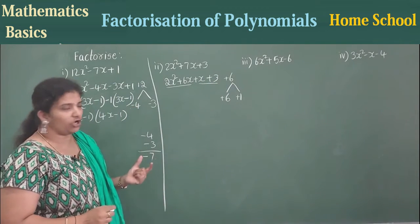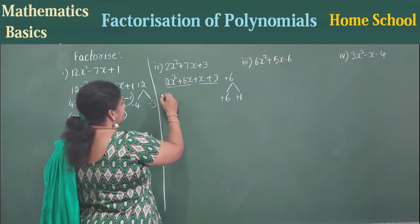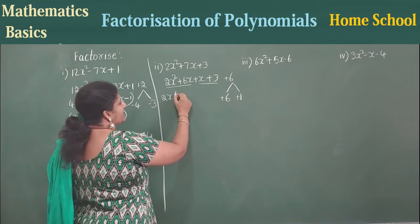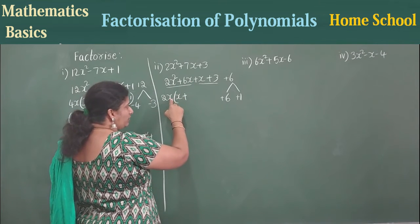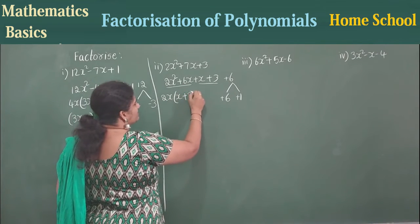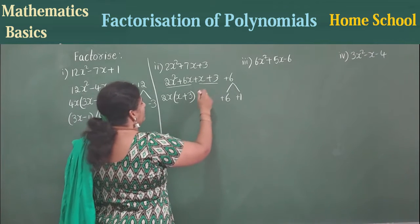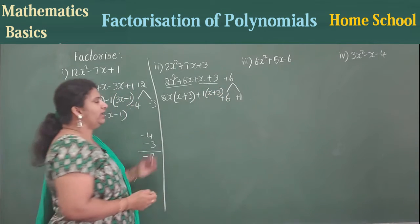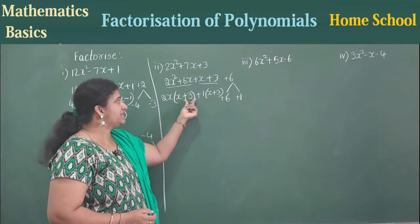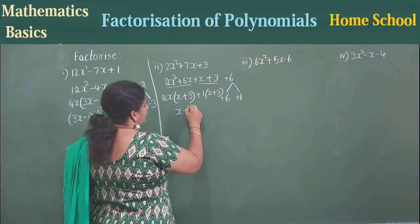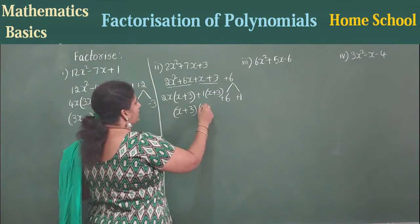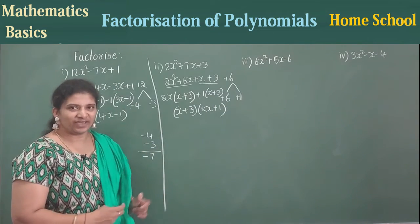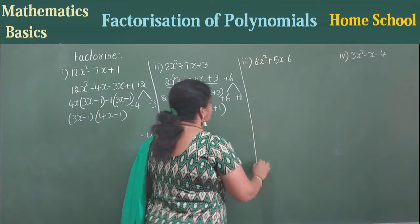So write: 2x² + 6x + x + 3. Take a pair. In the first two terms, 2x is common: 2 threes are 6, so 3x inside; 1x is taken out common. In the last two terms, nothing is common, so write 1(x + 3). Now in both groups, x + 3 is common. Take out x + 3 as common; what is left is 2x + 1. So the answer is (x + 3)(2x + 1).